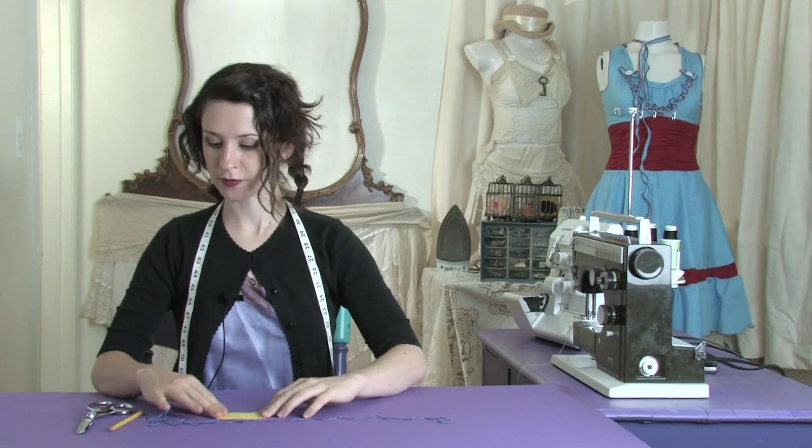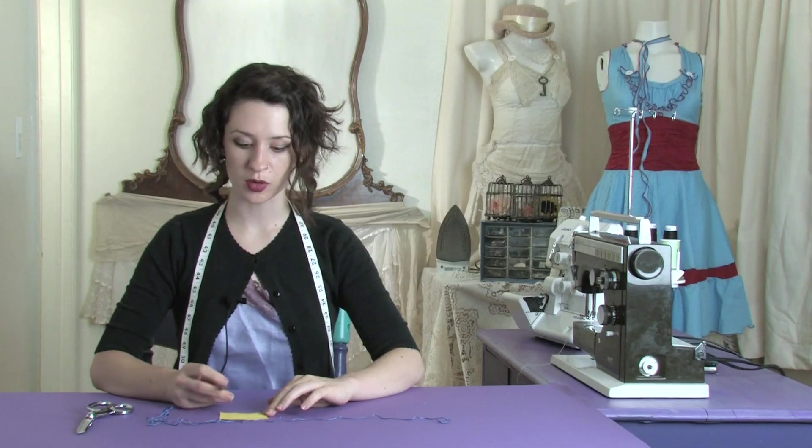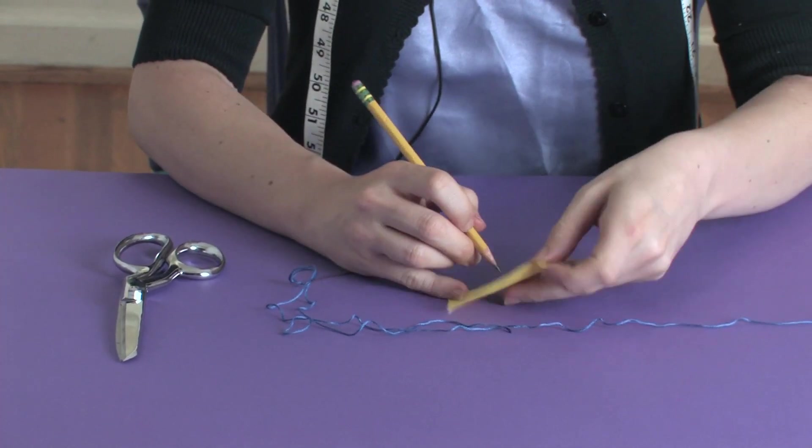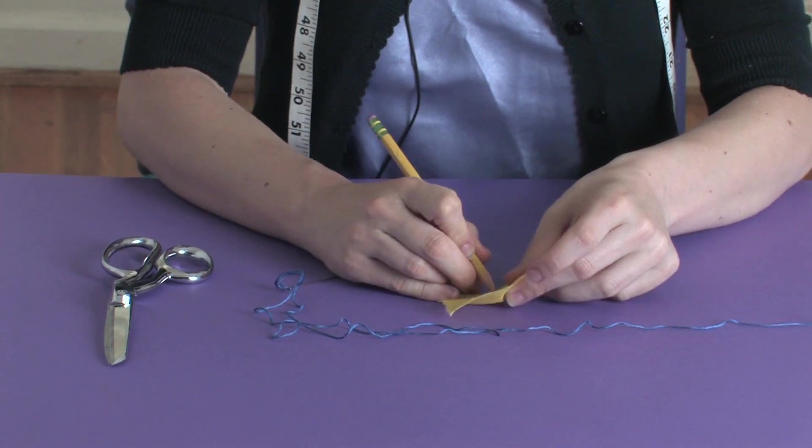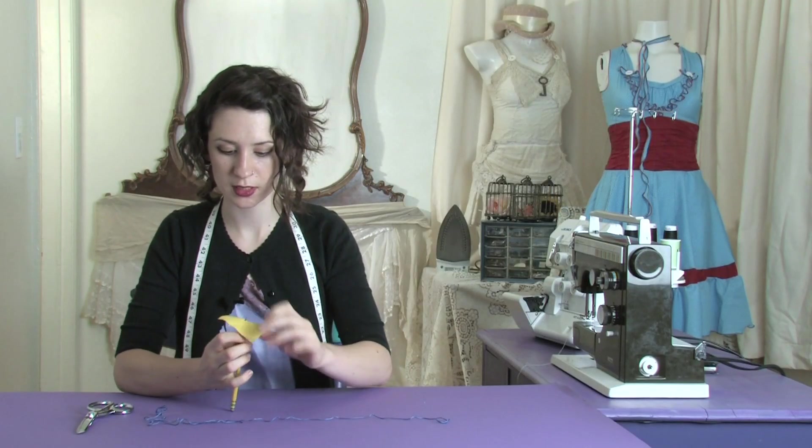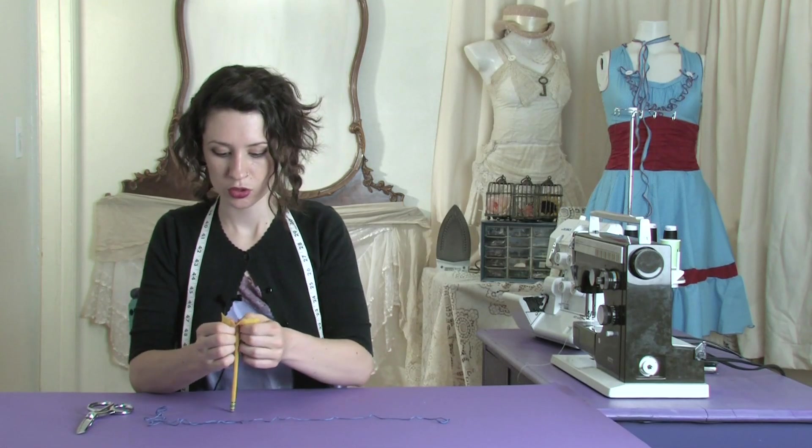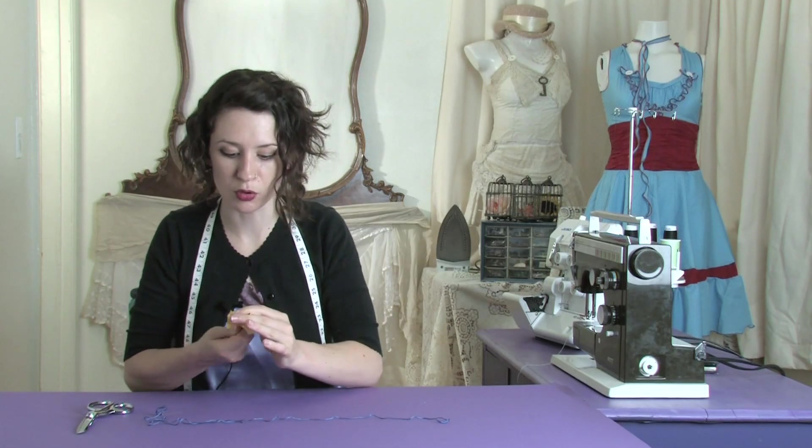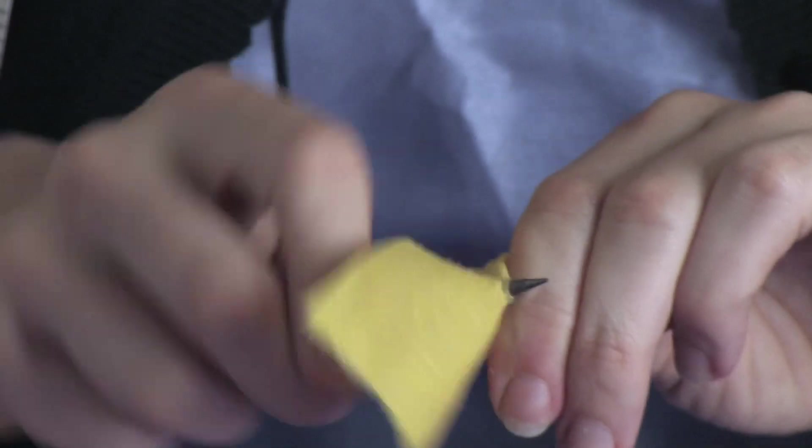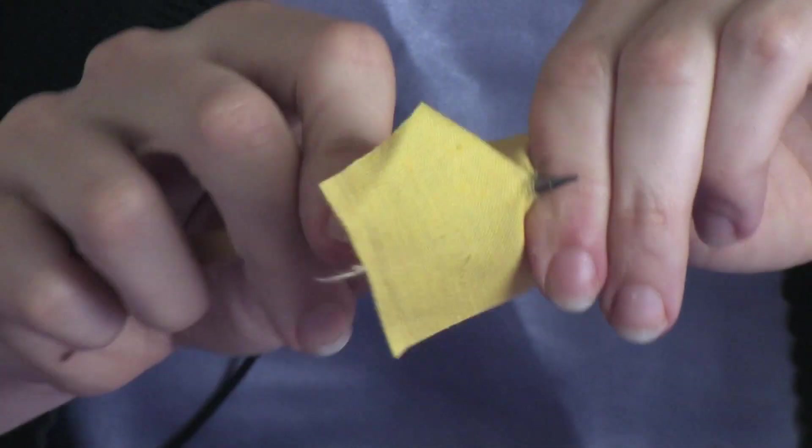So we're going to use this little piece of fabric and to start you want to make your hole. A really sharp pencil works really well for this. Just find where you want your hole and poke through and twist. Try to be moving the fabric out of the way, the threads out of the way, more than actually ripping a hole in the fabric.